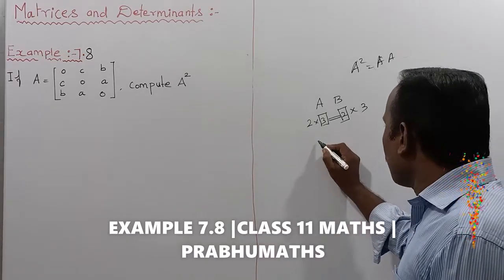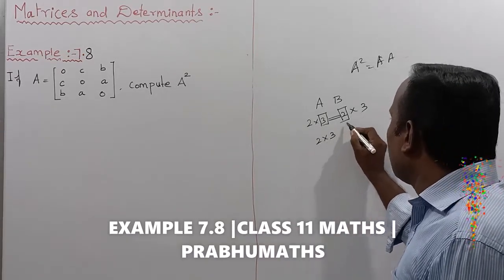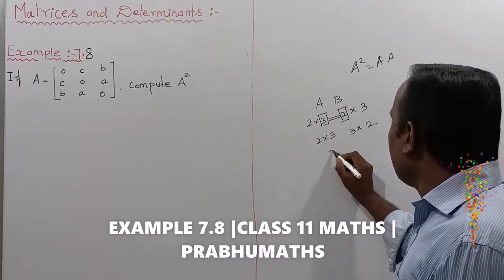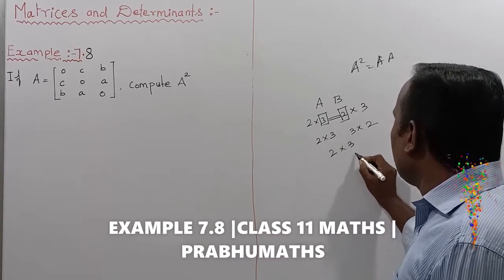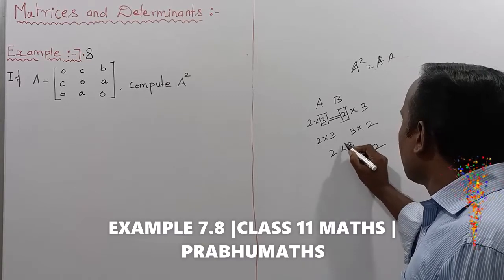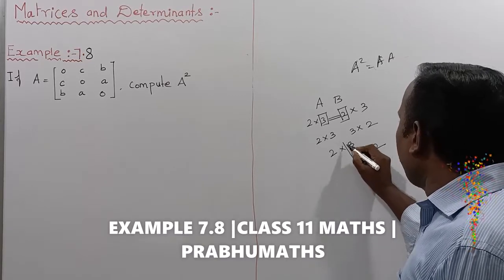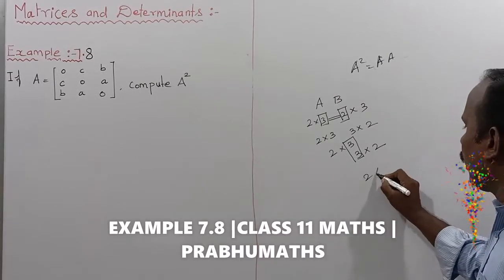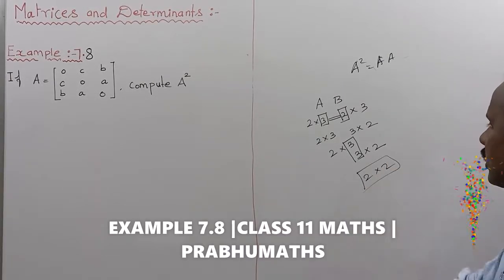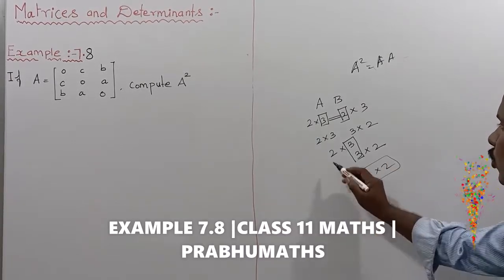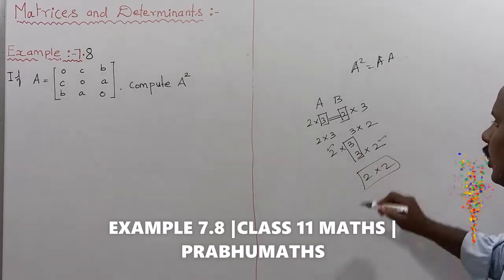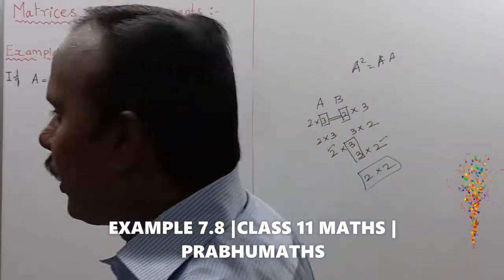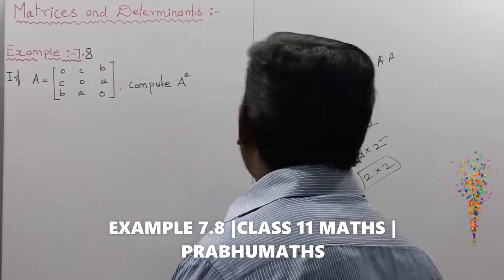For example, suppose the first matrix is 2×3 and the second is 3×2. The inner dimensions match — both are 3 — so we can multiply. The resulting matrix will be 2×2. That is the matrix multiplication definition.